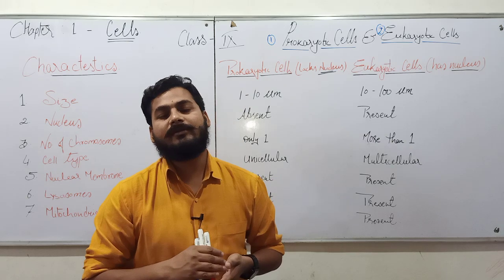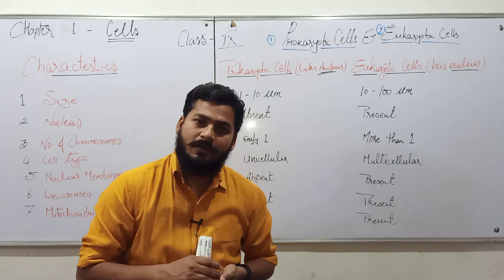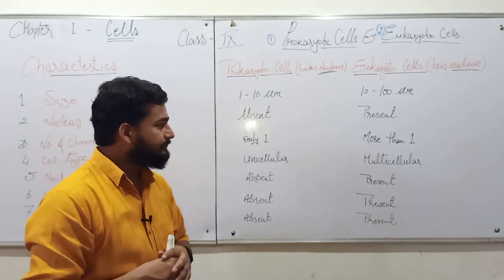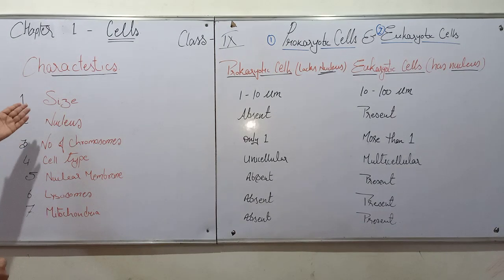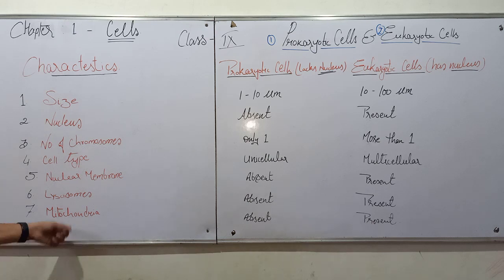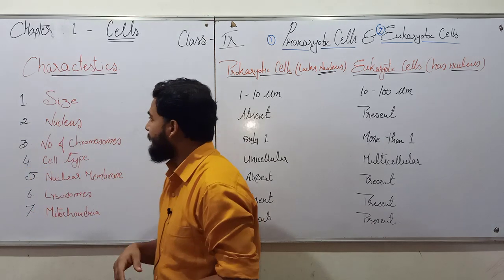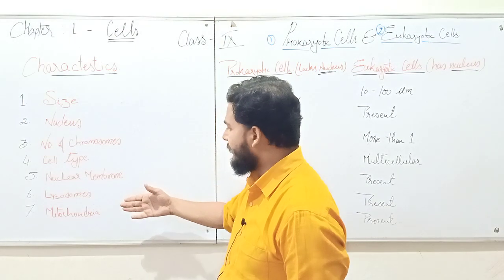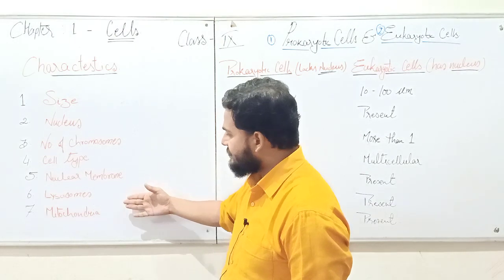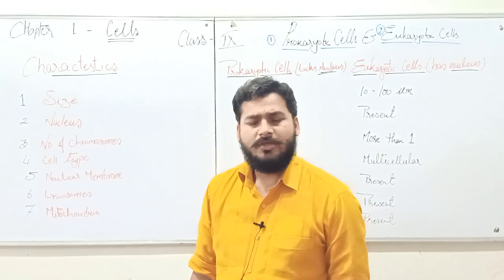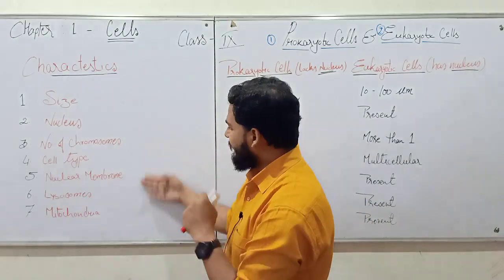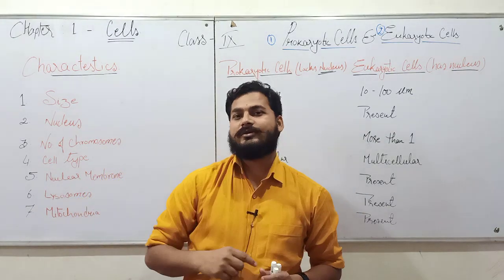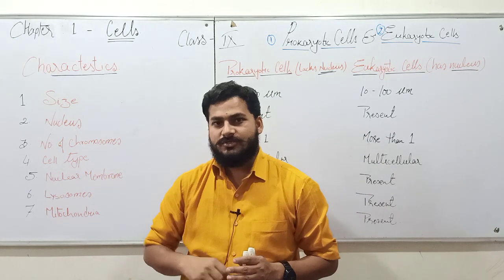Obviously if a true nucleus is present, nuclear membrane will be there, and if nucleus is not present, nuclear membrane will also not be present. Today we will talk about a few other differences as well. I have listed seven characteristics over here, and on the basis of these seven characteristics we are going to differentiate between prokaryotic and eukaryotic cells.